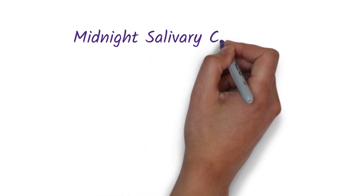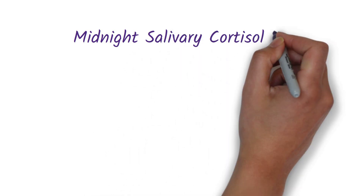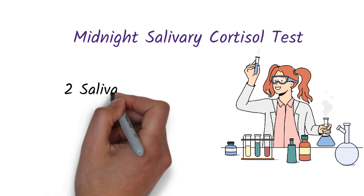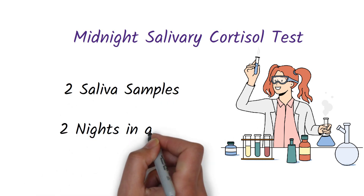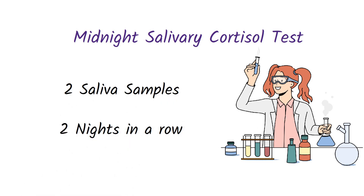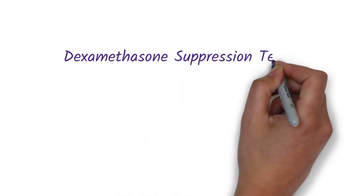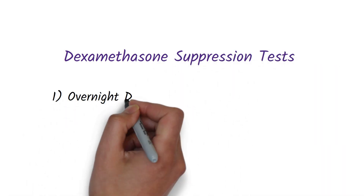The second test is the midnight salivary cortisol level test. This can be done by measuring the cortisol level in two saliva samples taken on two nights in a row. An abnormally high cortisol level is indicative of Cushing's syndrome, because nighttime is when your cortisol levels are the lowest.